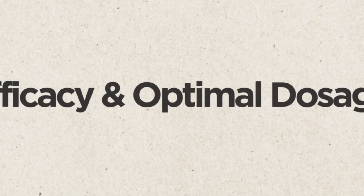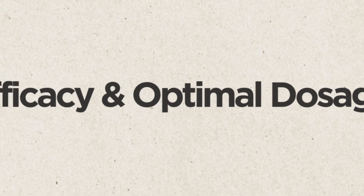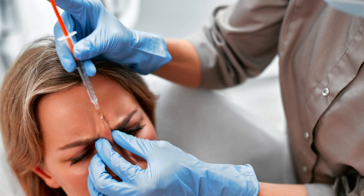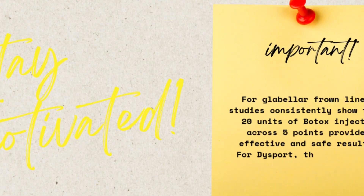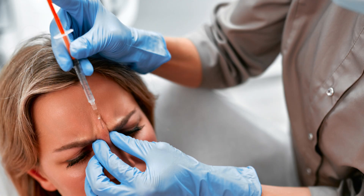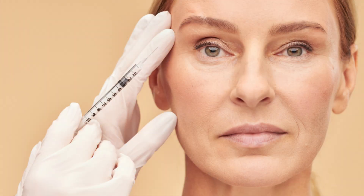Efficacy and optimal dosage: for glabellar frown lines, studies consistently show that 20 units of Botox injected across five points provides effective and safe results. For Dysport, the recommended dose is around 50 units, in line with the conversion ratio. In my own practice, I often find that 30 units of Dysport are sufficient for patients who receive treatment regularly, particularly when their main concern is not intense frown lines. For first-time patients or those with very strong corrugator muscles, I adjust the dose according to muscle strength and the patient's aesthetic expectations.